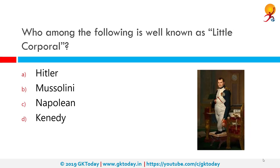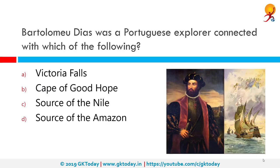Who among the following is well known as 'Little Corporal'? The correct answer is Napoleon. Napoleon Bonaparte was a French statesman and military leader who rose to prominence during the French Revolution and led several successful campaigns during the French Revolutionary Wars. He was Emperor of the French as Napoleon I from 1804 to 1814, and again briefly in 1815 during the Hundred Days.